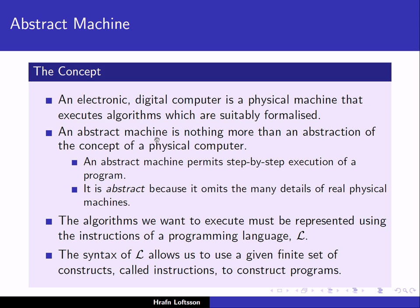An abstract machine is nothing more than an abstraction of the concept of the physical computer. An abstract machine permits step-by-step execution of a program, just as is the case for a physical machine. But it is abstract in the sense that it omits the many details of a real physical machine — we abstract away from those details.